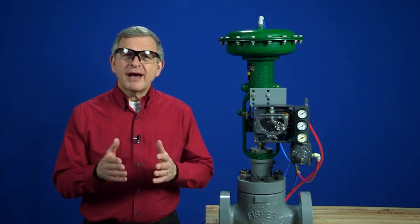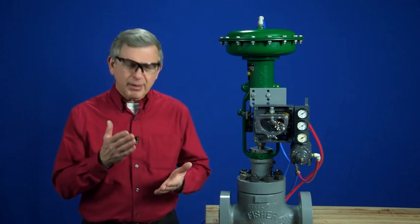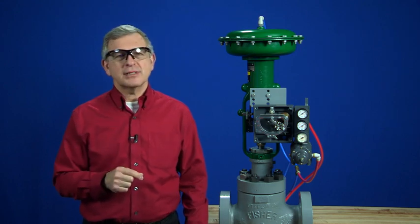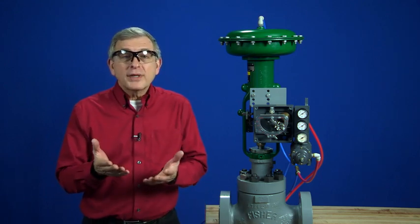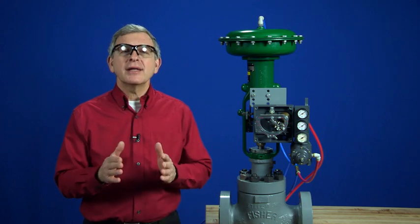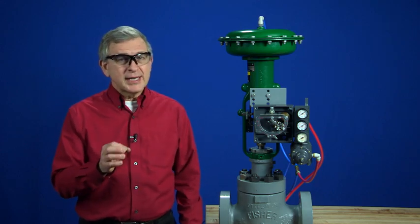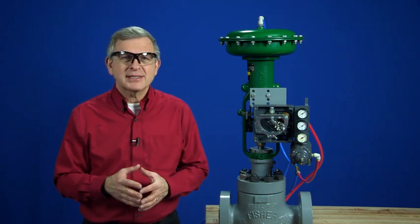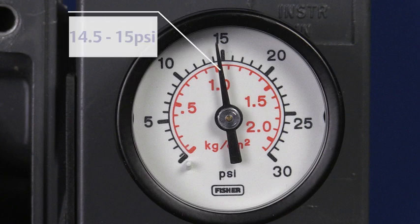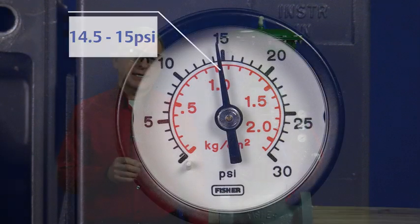That means the valve has hit a stop, and the positioner is applying full supply to provide maximum seat load. Our goal is to make the positioner saturate just inside the upper limit of our input signal, in this case, 15 psi. When it saturates, ideally, it should be between 14.5 and 15 psi.